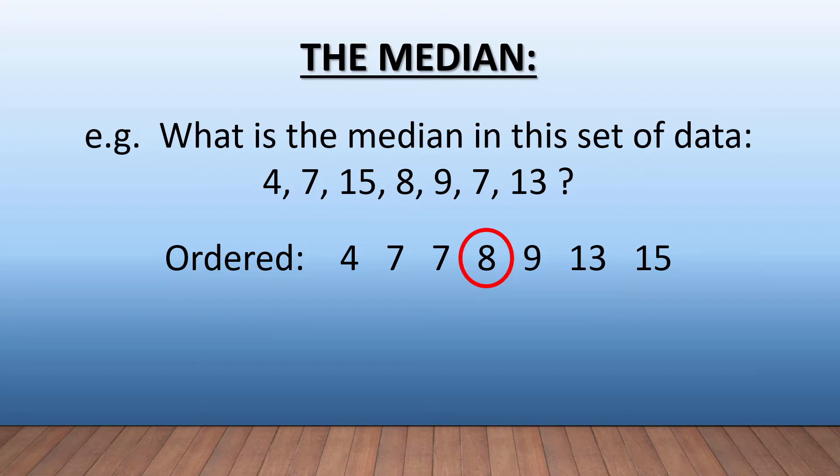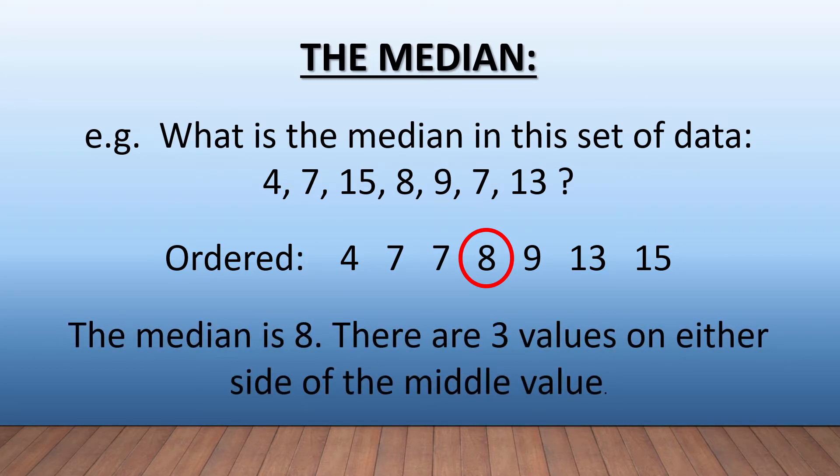Once we've done that, we see that our middle or median in the set of data is 8. Why? Because it's smack bang in the middle—we've got three on the left side and three on the other side, so it is literally in the middle of all that data.